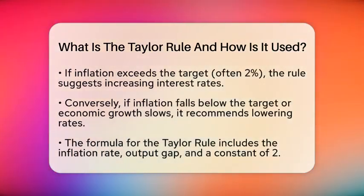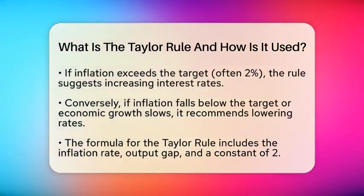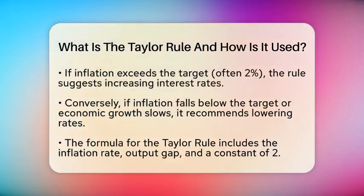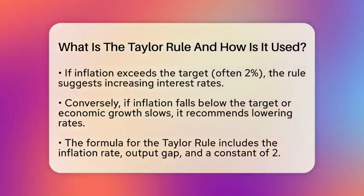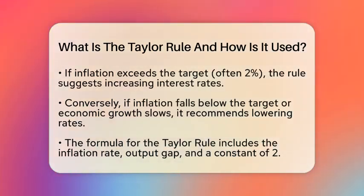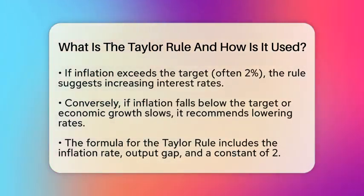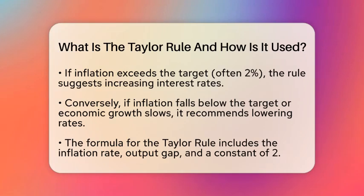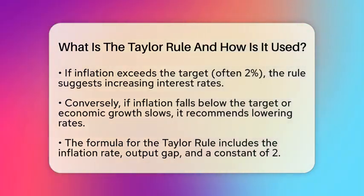The formula for the Taylor Rule is expressed as follows: the recommended policy rate equals the inflation rate plus 0.5 times the output gap, plus 0.5 times the difference between inflation and 2%, plus 2.